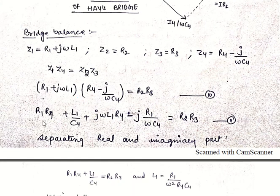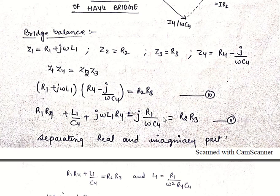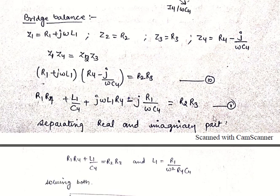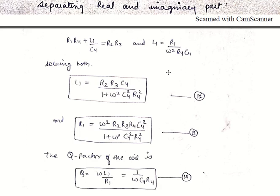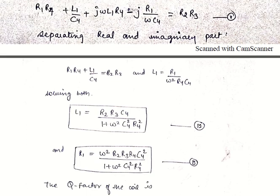Putting all values into Z1·Z4 = Z2·Z3: (R1 + jωL1)(R4 − j/(ωC4)) = R2·R3. Expanding and solving, we get: R1·R4 + L1/C4 + j(ωL1·R4 − R1/(ωC4)) = R2·R3. Separating real and imaginary parts, the real part gives: R1·R4 + L1/C4 = R2·R3, and the imaginary part gives: L1 = ω²·R4·C4·R1... (to be used jointly).